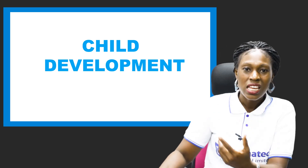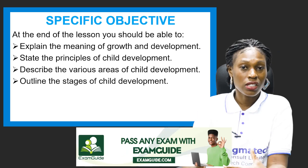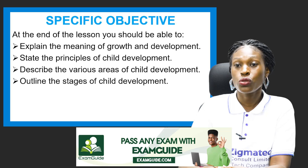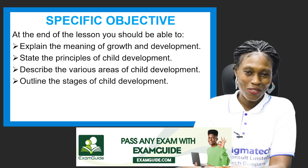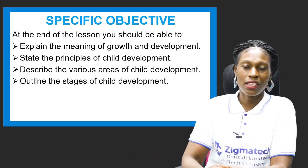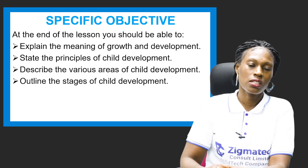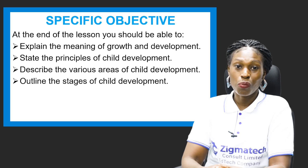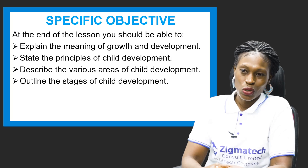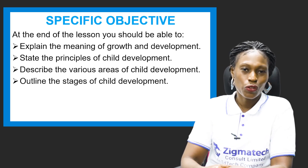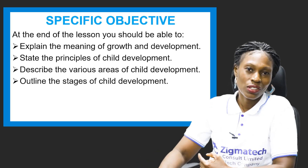Child development is what we would be looking at today. There are some things you should get familiarized with. By the end of this class, you should be able to explain the meaning of growth and development, state the principles of child development, describe the various areas of child development, and also outline the stages of child development. Sit back — we're going to learn a whole lot today.